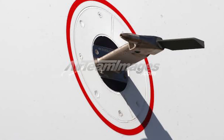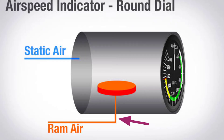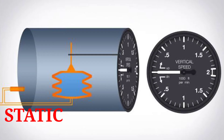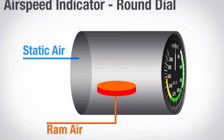With the help of ram air and static air pressure difference, we can measure the airspeed indicator. With the help of only static air pressure, we can measure the vertical speed indicator and the altimeter. Ram air can only be used to measure the airspeed indicator, so static pressure is the most important element of the system.